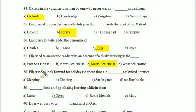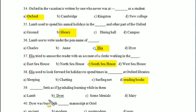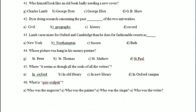Elia used to look forward for holidays to spend time in — greening, sleeping, chatting, surfing net, or reading books? Answer is 'reading books.' He feels as if he is inhaling learning while in them. George Dyer was busy with — ancient, modern, postmodern, or new — research? Your answer is 'ancient.'